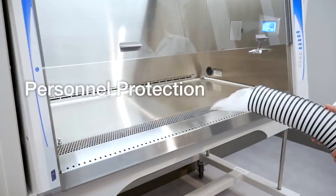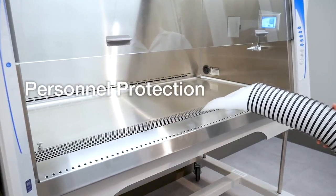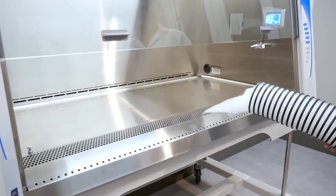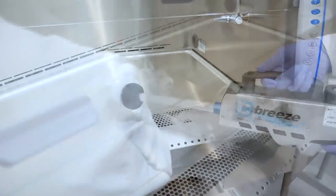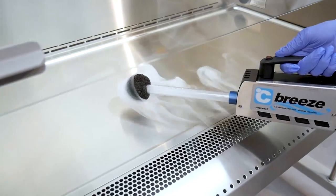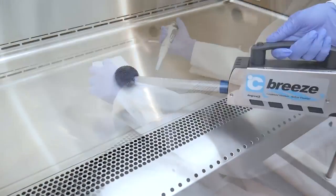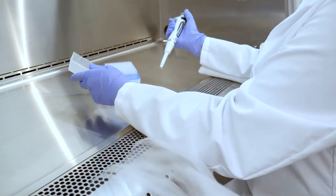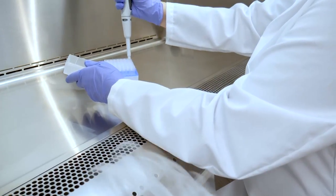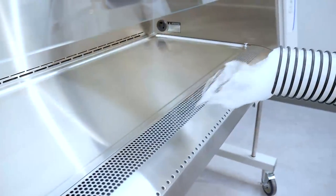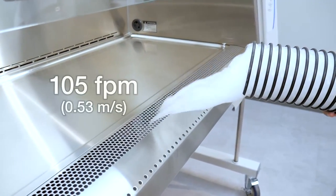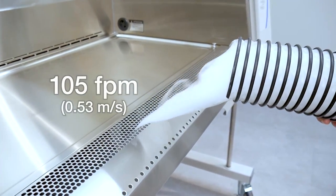A BSC provides personnel protection to protect a user during working operations. Room air is drawn into the front inlet of the cabinet where it meets contaminated air captured from within the cabinet interior. This air, known as inflow air, is drawn under the work surface and is then recirculated or exhausted from the BSC. Inflow air has a typical velocity of 105 feet per minute.